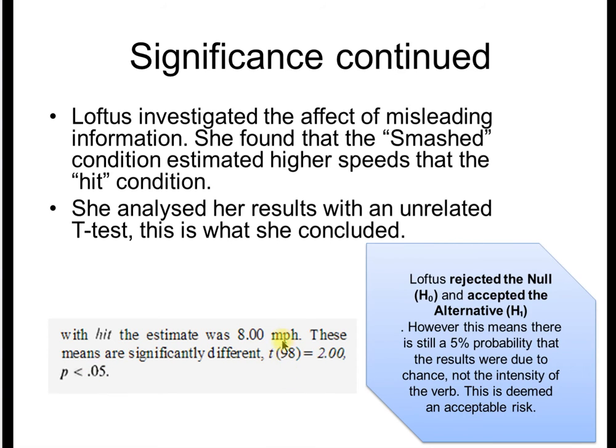She's calculated this value that says to her, my results are accurate. My results do show a difference between the hit and smashed group. However, even though my results are significant, there is still this 5% probability that they just occurred due to chance. And this is made even worse by the fact that Loftus only had 45 participants. 5% is deemed an acceptable risk in this case. And this is Loftus' actual conclusion from her paper.